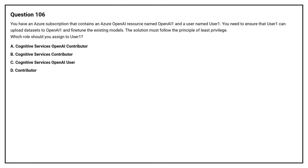Question number 106. You have an Azure subscription that contains an Azure OpenAI resource named OpenAI1 and a user named User1. You need to ensure that User1 can upload datasets to OpenAI1 and fine-tune the existing models. The solution must follow the principle of least privilege. Which role should you assign to User1?